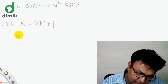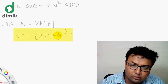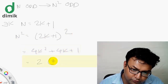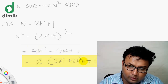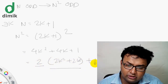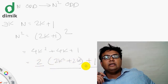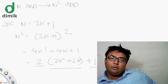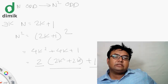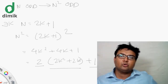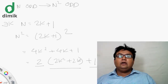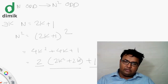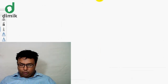If n is odd, we can write n as 2k plus 1. Then n squared equals (2k+1) squared, which equals 4k squared plus 4k plus 1. Factoring out 2 gives 2(2k squared plus 2k) plus 1, which is 2 times an integer plus 1. The remainder when divided by 2 is 1, so n squared is odd. This completes the contrapositive proof that if n is odd, n squared is odd — which proves that if n squared is even, then n is even.